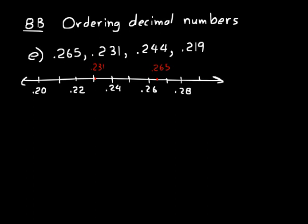.244, .244, that would be maybe right around in here somewhere, so I'll put .244, and then .219, that would almost be .22, and I'll put that right here. And so now we see the order of those values, and that's our answer.